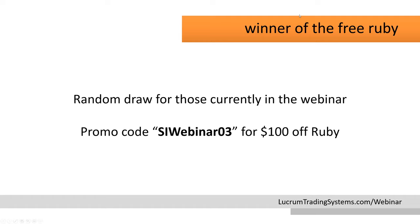Now we're going to do a random draw for the attendees. The winner is Jan — congratulations. Please send an email with your NinjaTrader machine ID and I'll get that sent out to you. If you already own the Ruby system, you will instead receive the three system package. Congratulations, Jan.